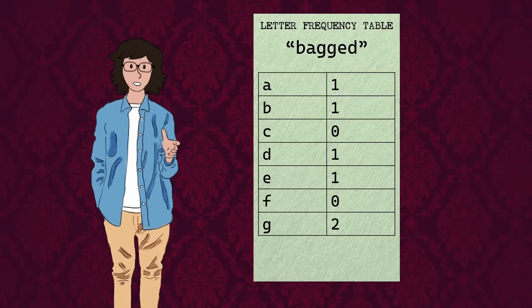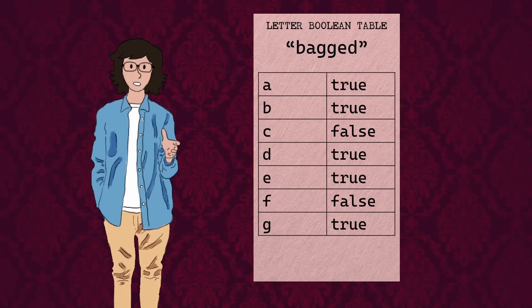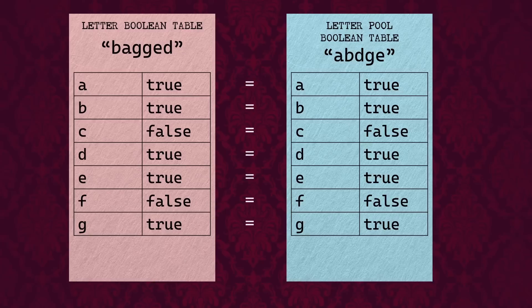Here's how we're going to optimize the algorithm. For now, let's not worry about quantities of letters. We'll just try to make the program suggest words that have the correct letters, even if they're in the wrong quantities. So instead of tallying up letters and making letter frequency tables, we'll create tables of boolean values — true/false values — just to indicate whether each letter of the alphabet is present in the word or not. If we cross-compare each word's boolean table with the letter pool's boolean table to confirm the word has the correct letters, words like 'bagged' will be suggested even if they need a greater quantity of certain letters than the pool provides. But we'll fix that a little later.